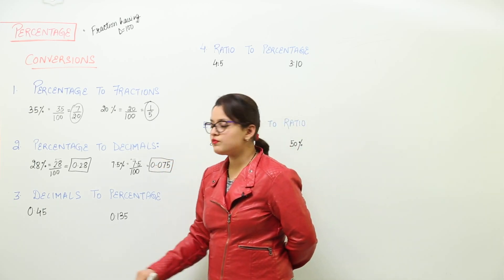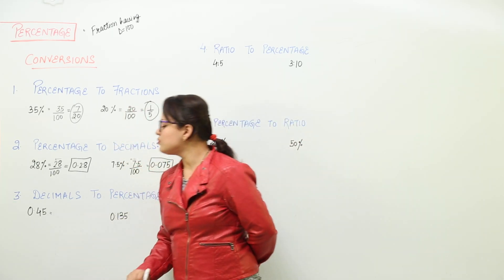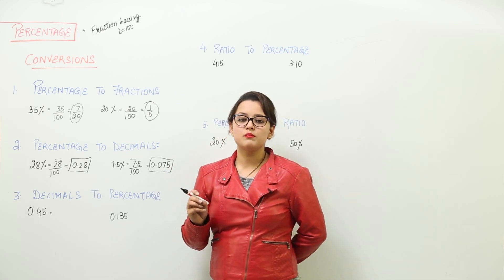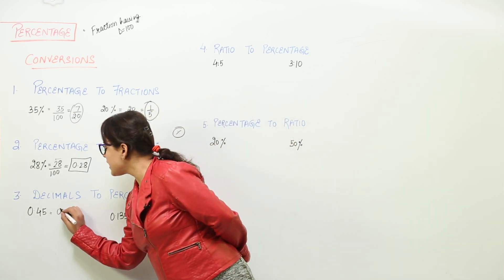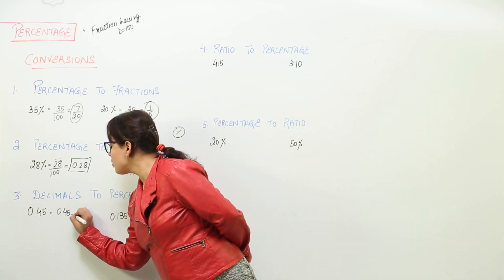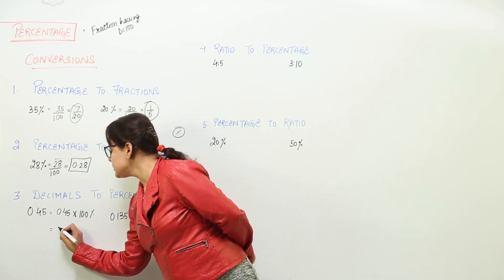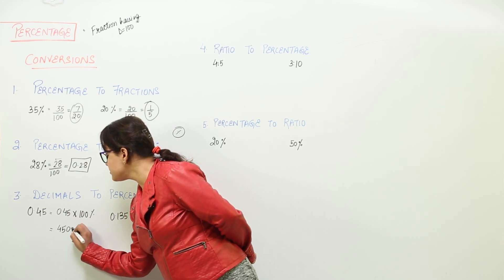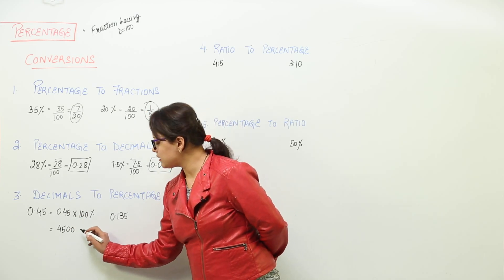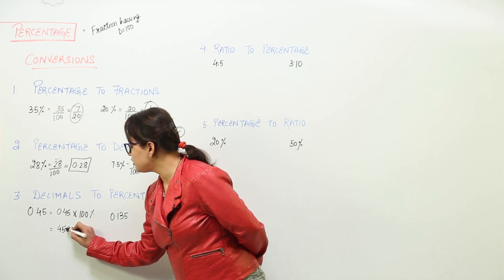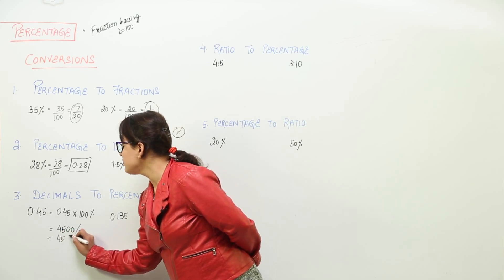Next is the conversion from decimals to percentage. This is very simple. We multiply 0.45 with 100 percent. When you multiply, you write 4, 5 with two zeros, then place two decimal places counting from the rightmost digit. That leaves us with 45 percent.